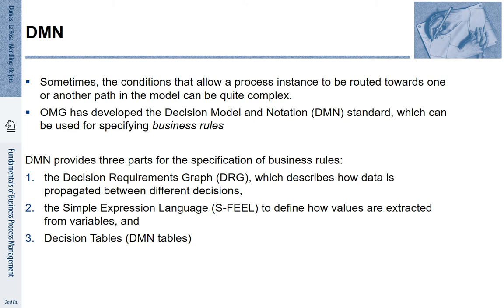Business processes often require that we take decisions. Often these decisions are clearly defined by so-called business rules. The Object Management Group has developed the Decision Model and Notation standard, which allows us to specify business rules. DMN provides three parts for specifying business rules at different levels of granularity. The Decision Requirements Graph, DRG, allows us to describe how data is propagated between different decisions.